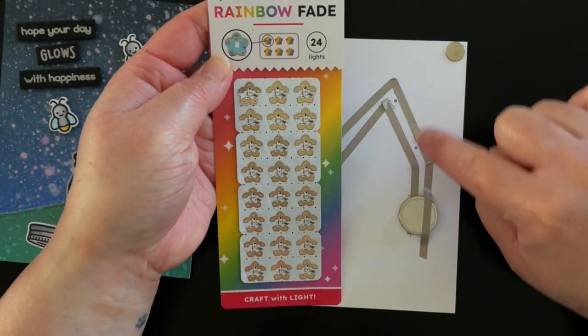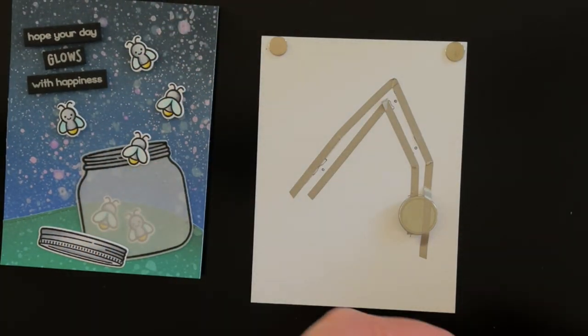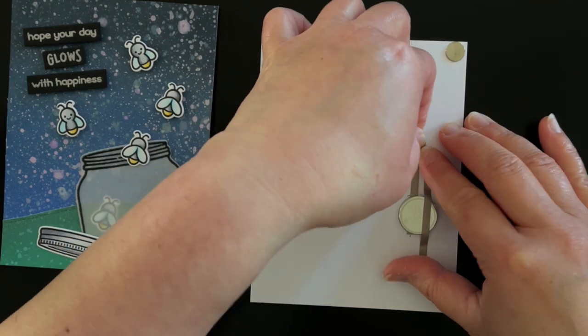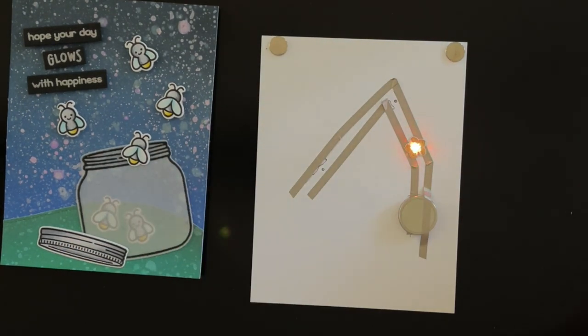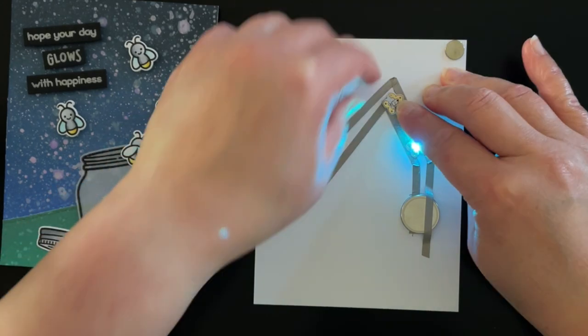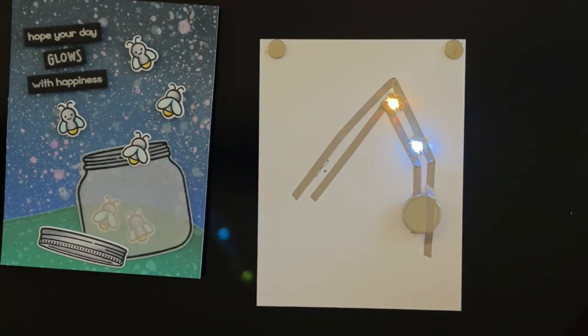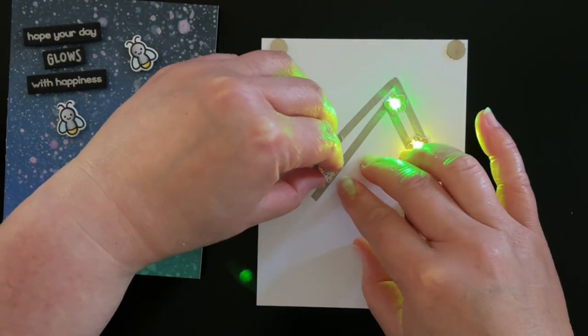Next I apply my rainbow fade animating LEDs, making sure that the larger three-petal side covers the positive line of tape, and the smaller two-petal side covers the negative line of tape. These rainbow fade animating LEDs slowly fade through the colors of the rainbow.